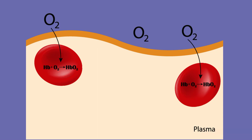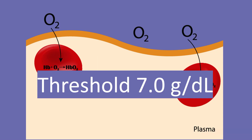So what is the treatment for this? We transfuse the patient — give the patient some red blood cells. Typically, we'd say that the threshold would be seven grams per deciliter.